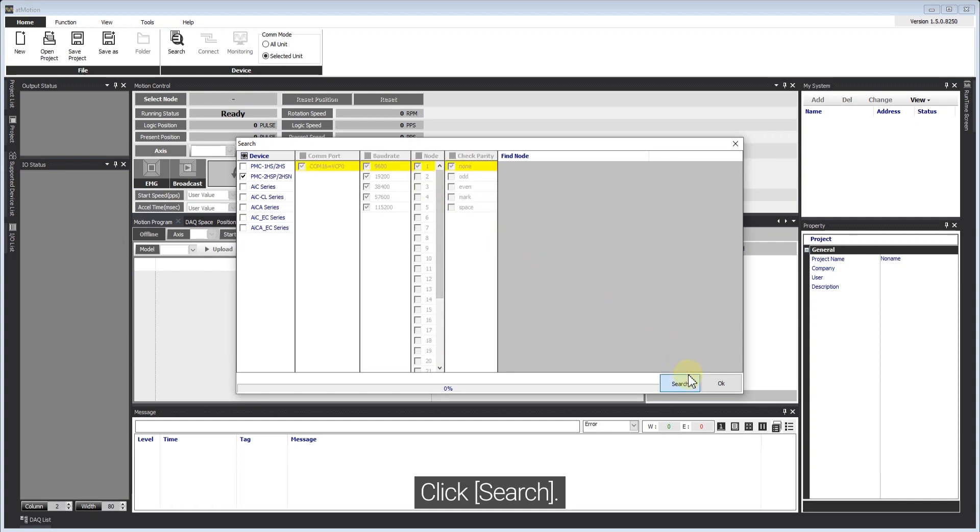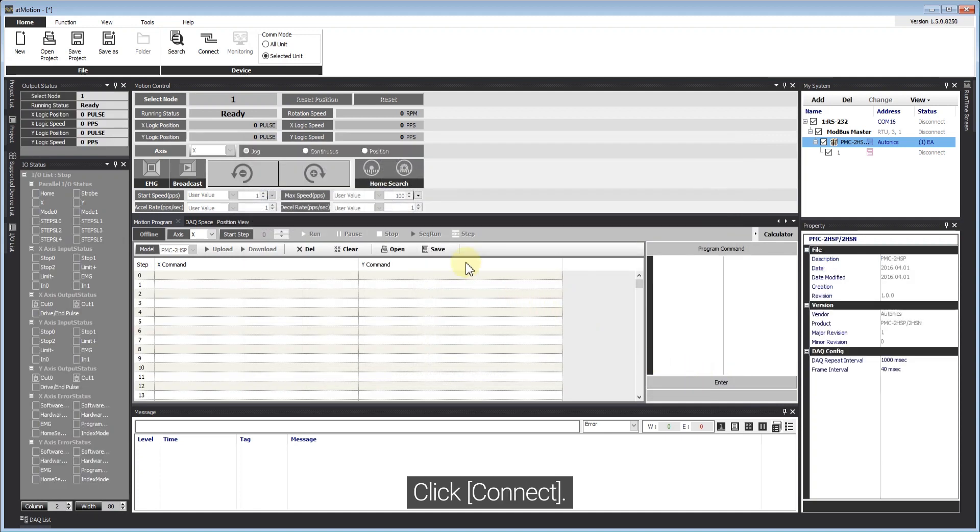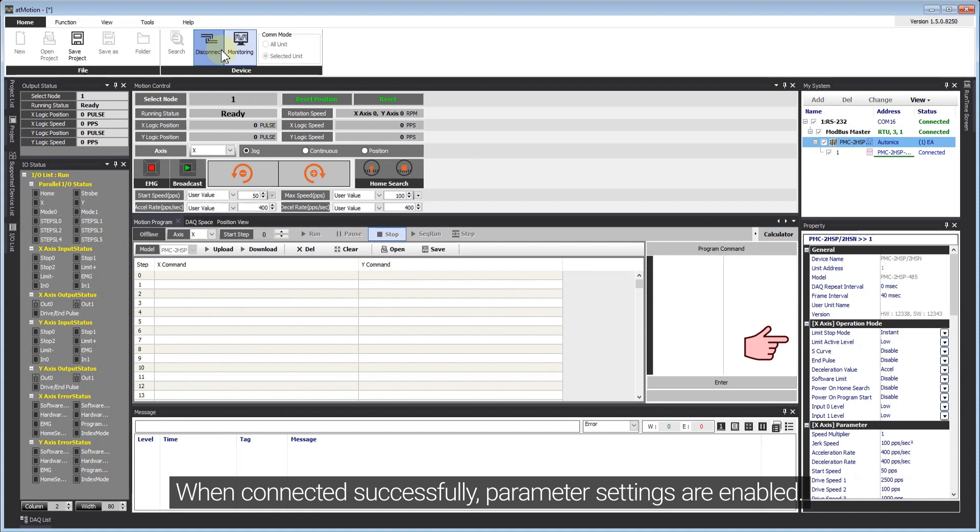Click Search. Click OK. Click Connect. When connected successfully, parameter settings are enabled.